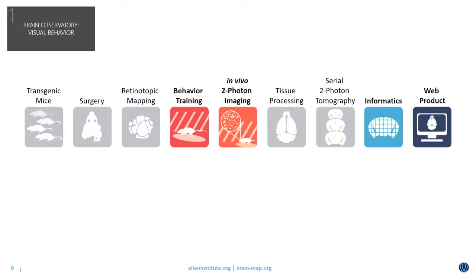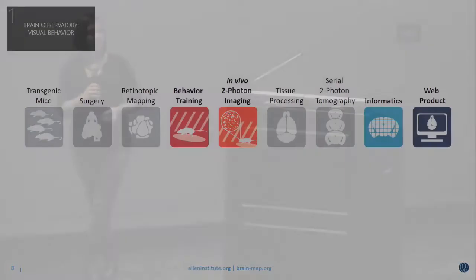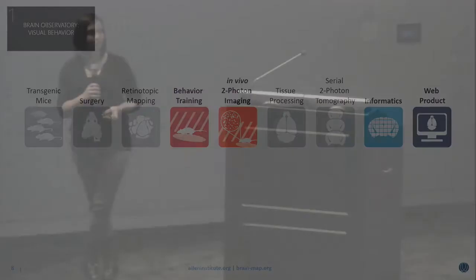To address questions about how sensory encoding is influenced by behavior states, we're going to modify a few key aspects of this workflow. Importantly, we're going to add a behavior training step prior to imaging. During in vivo two-photon calcium imaging, instead of measuring responses in passively viewing animals, we'll measure activity as mice are actively making decisions about the stimuli on screen. We'll then process this information and turn it into a web product focused on the unique aspects of information processing in the context of behavior.